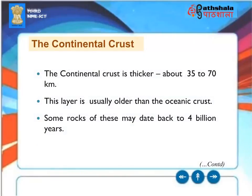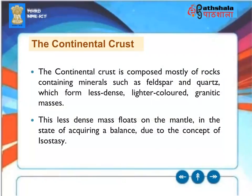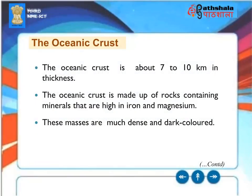The continental crust is thicker, about 35 to 70 km. This layer is usually older than the oceanic crust — some rocks may date back to 4 billion years. The continental crust is composed mostly of rocks containing minerals such as feldspar and quartz, which form less dense, lighter-colored granitic masses. This less dense mass floats on the mantle, acquiring a balance due to the concept of isostasy.